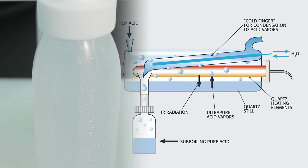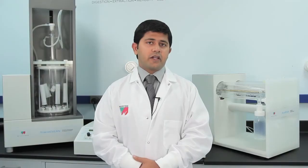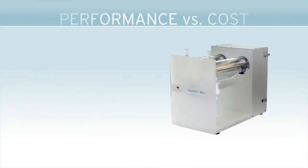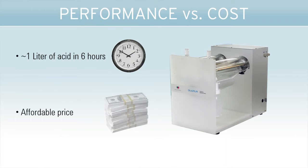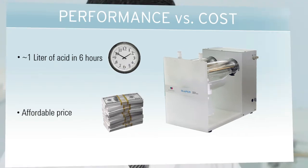Because the temperature of the acid never goes above the boiling point, only purified acid vapors are collected on the cold finger. The DuoPure can produce a liter of high purity acid in about six hours at a price that is affordable for ICP-OES users, and it can also be used for microwave digestion.